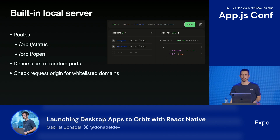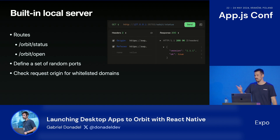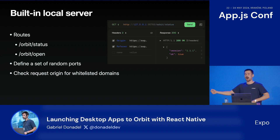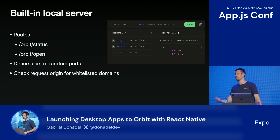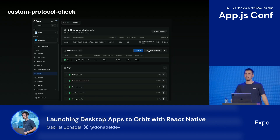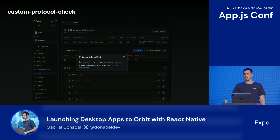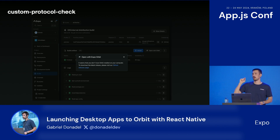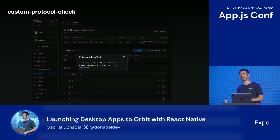So if we really wanted this interaction to be smooth, we would need to circumvent this annoying pop-up somehow. What we ended up doing — and most other apps do as well — is just running a local server while the app is open that can be fetched directly from our website. For Orbit, we created two main routes: one that returns the status of the app, and another that allows us to open builds directly. Always define a random set of ports, because other applications may try to run a local server on the same ports. Also, make sure to check the request origin for whitelisted domains to prevent unauthorized access. For users that still don't have the app installed, we can use a library called custom protocol check, which detects when we try to open a deep link if we get the blur event — and if that blur event does not get triggered, we show the pop-up asking users to download our app.